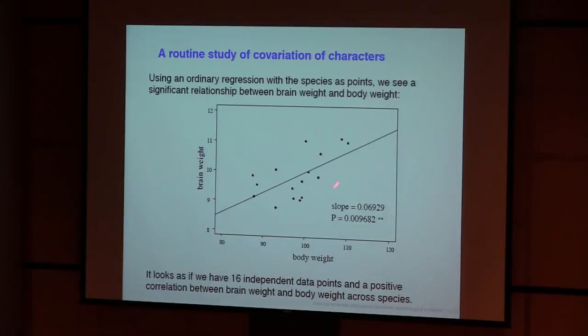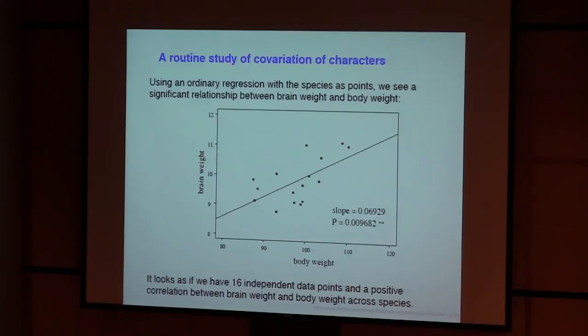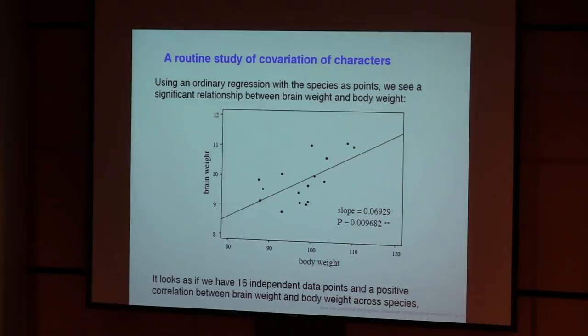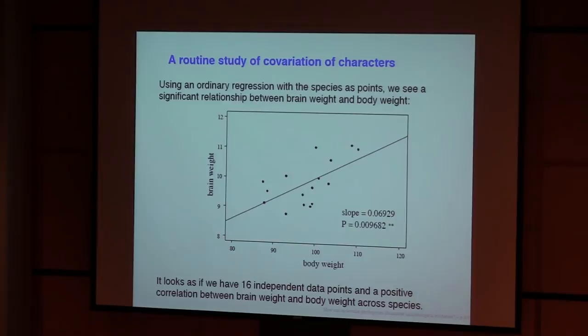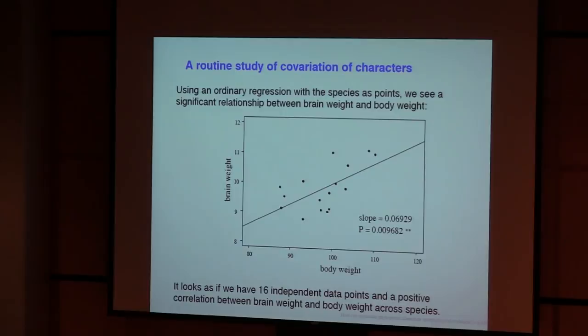And the problem with that is, of course, that this regression, the assumptions you make in the statistical test, is that you have independent data points, there are 16 of them here, and that those are independent, identically distributed, drawn from some distribution, that's the common assumption in regression analysis. And if you use it this way, you're making the assumption that all of those points evolved completely independently of each other. But, of course, we didn't.